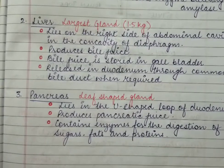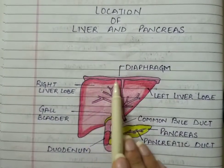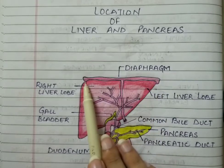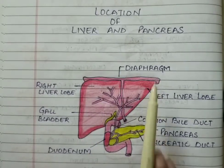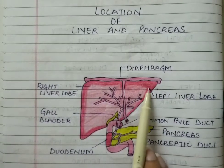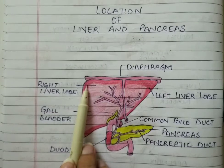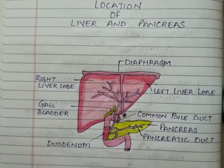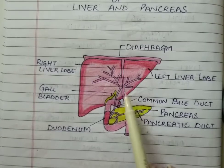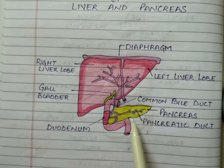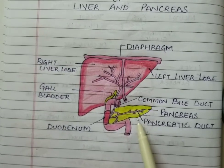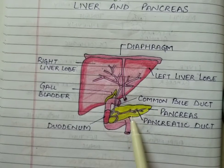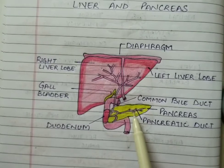Now I will discuss the diagram with you. Here the diaphragm is present. The liver is present in the abdominal cavity in the concavity of the diaphragm — this is the concavity of the diaphragm and here the liver is present. It has two lobes: the left liver lobe and the right liver lobe. I have colored the diagram to make the different parts clear. You can see the leaf-shaped organ, the pancreas, and the pancreatic duct which carries the pancreatic juice.